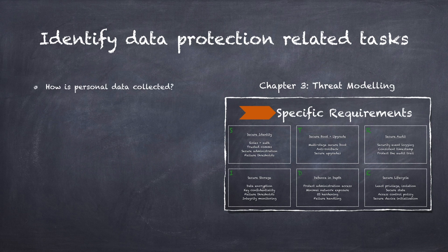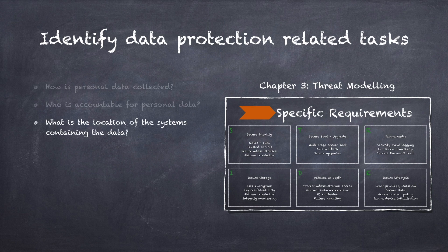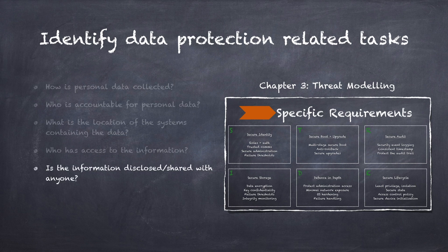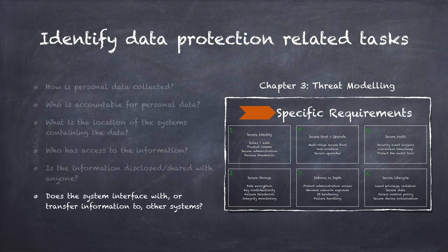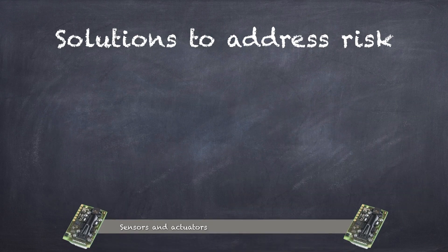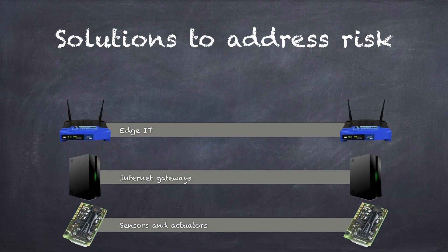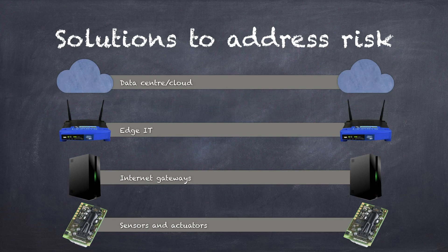Those questions include: How is the personal data being collected? Who is accountable for the personal data? What is the location of systems containing the data? Who has access to this information? Is the information disclosed or shared with anyone? Does the system interface with or transfer information to other systems? Just like mitigating threats, solutions that address risk to data privacy should span across all stages of the IoT architecture where appropriate.